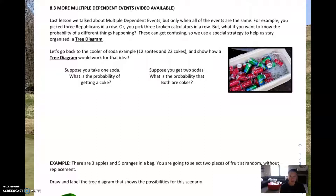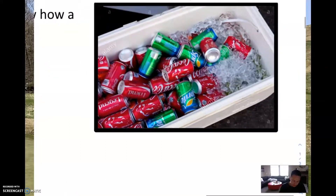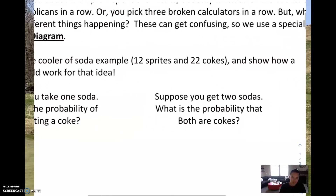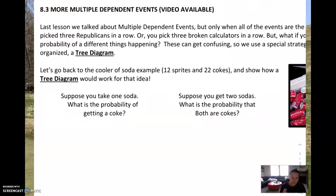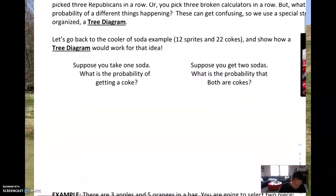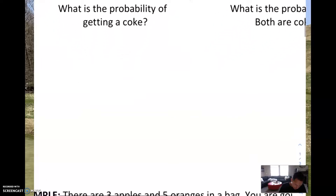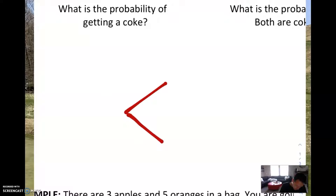Remember that cooler of soda? In that cooler of soda, there were a bunch of Sprites and a bunch of Cokes — in particular, 12 Sprites and 22 Cokes. And what I want to do is draw a tree diagram to show all the possibilities of how I could select two of those sodas. I'm going to take one soda, and I could either get a Sprite or a Coke.